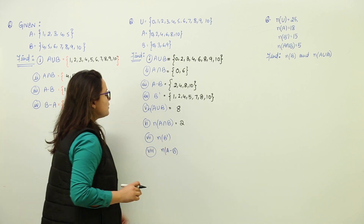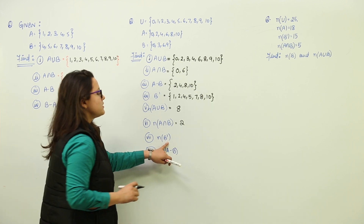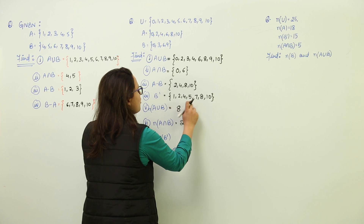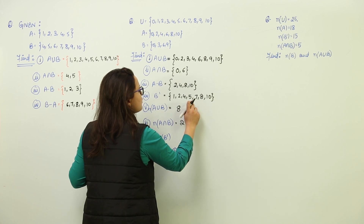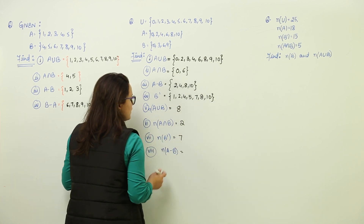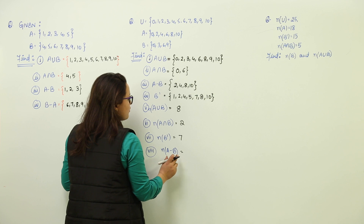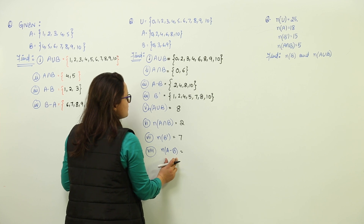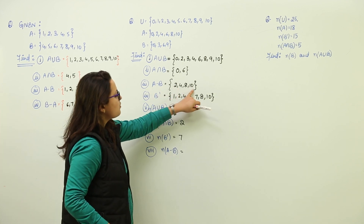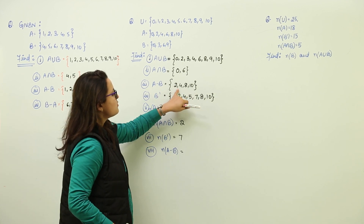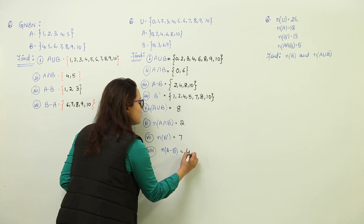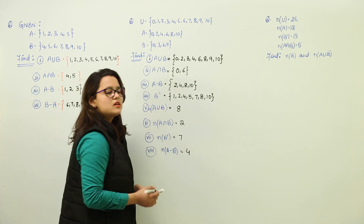Cardinal number for B complement would be 7. Cardinal number for A minus B — A minus B had 4 elements, so the cardinal number of A minus B is 4.